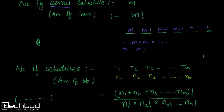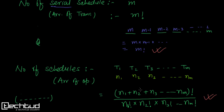For serial schedules we did not divide m! by anything because we were arranging whole transactions — operations within each transaction are automatically in the correct order. For the total schedule count we must divide. The number of non-serial schedules is then the total schedule expression minus m!.